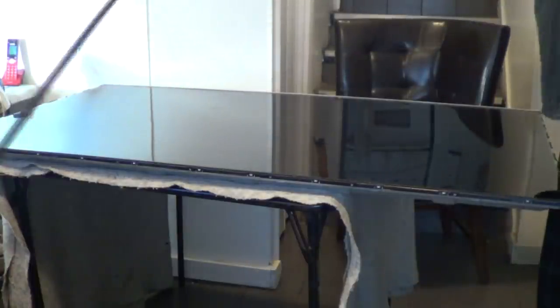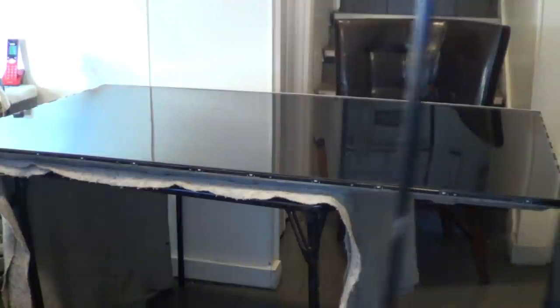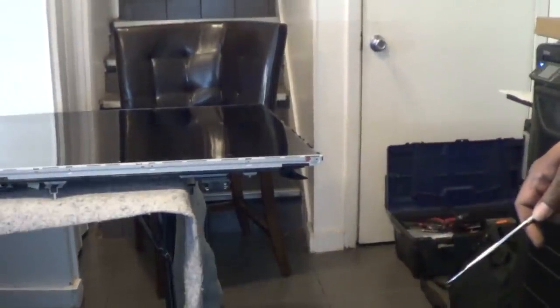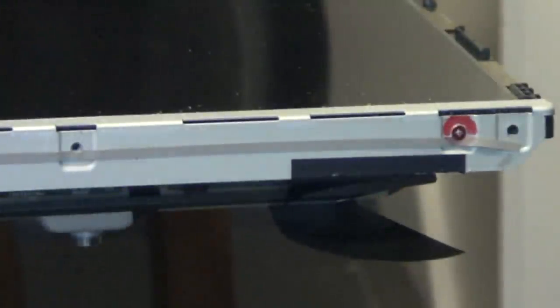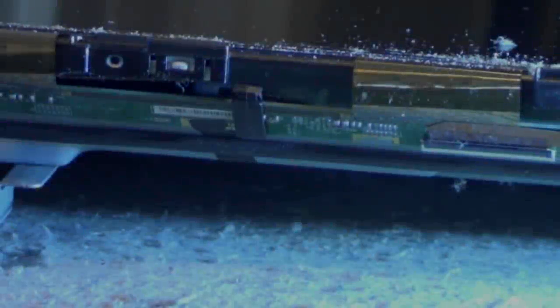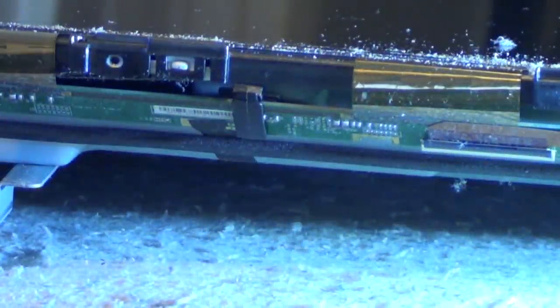Once all the screws are removed, that should come up pretty easily. Put that to the side. It's kind of flimsy, so try not to break it. And then we have a metal plate on the bottom protecting the driver boards. There's just two screws on it, one on each end. As you can see, I have it marked in red. We'll just pull those out and that should lift right up. Don't forget to put that back on when you reassemble the TV.